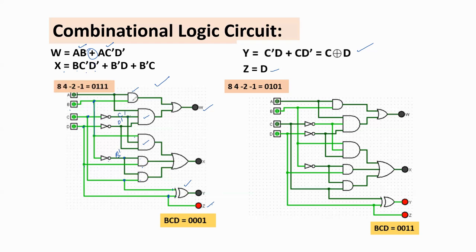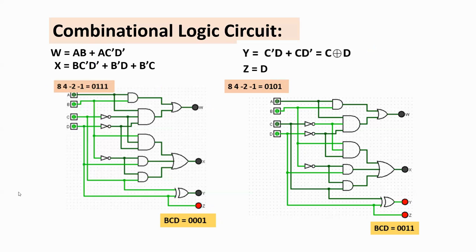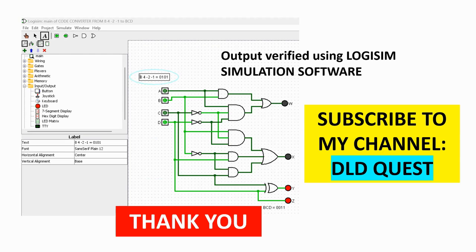The circuit diagram was verified against each and every combination of the truth table using LogiSim software. For example, for 8-4-minus2-minus1 input 0111, the corresponding BCD output is 0001 — shown with black (off) and red (on, meaning 1) indicators. For another example, input 0101 gives BCD output 0011. In this way, every combination was verified. If you want, in the next video I will give a complete explanation of how to simulate using LogiSim software.